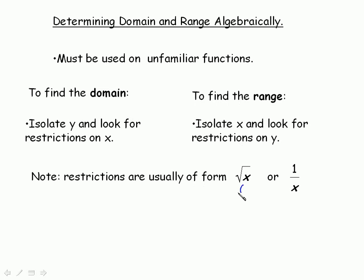When we have the square root of x, it means that x has to be greater than or equal to zero. You cannot take the square, or for any even root, you cannot have the radicand negative. And then for the second one, the restriction is that x cannot be equal to zero.